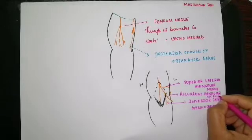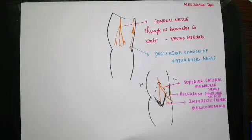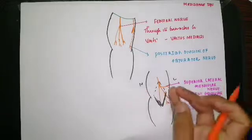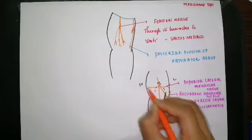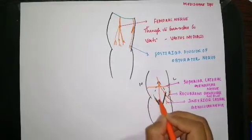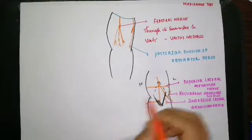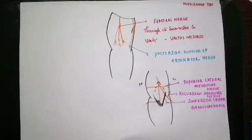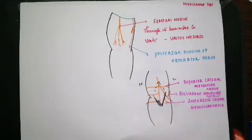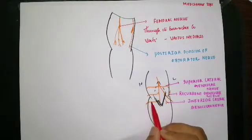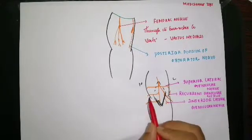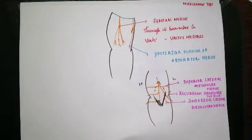Now the branches of the tibial nerve: the tibial nerve is on the medial aspect compared to the common peroneal nerve. It gives a superior medial genicular nerve superiorly, an inferior medial genicular nerve inferiorly, and a middle genicular nerve in the middle. So the three branches are: superior medial genicular, inferior medial genicular, and middle genicular.